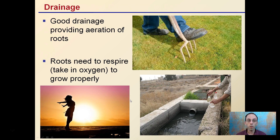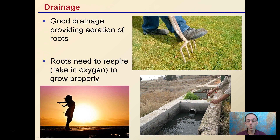Then there's drainage. Good drainage should provide aeration for roots. Here we see a pitchfork being plunged into the soil to break it up and help increase aeration. Roots need to respire — they need to take in oxygen in order to grow properly. So we don't want them soaking in water for a long period of time. For most plants, that's not going to be a good result, and it's going to be evidence of poor soil fertility.